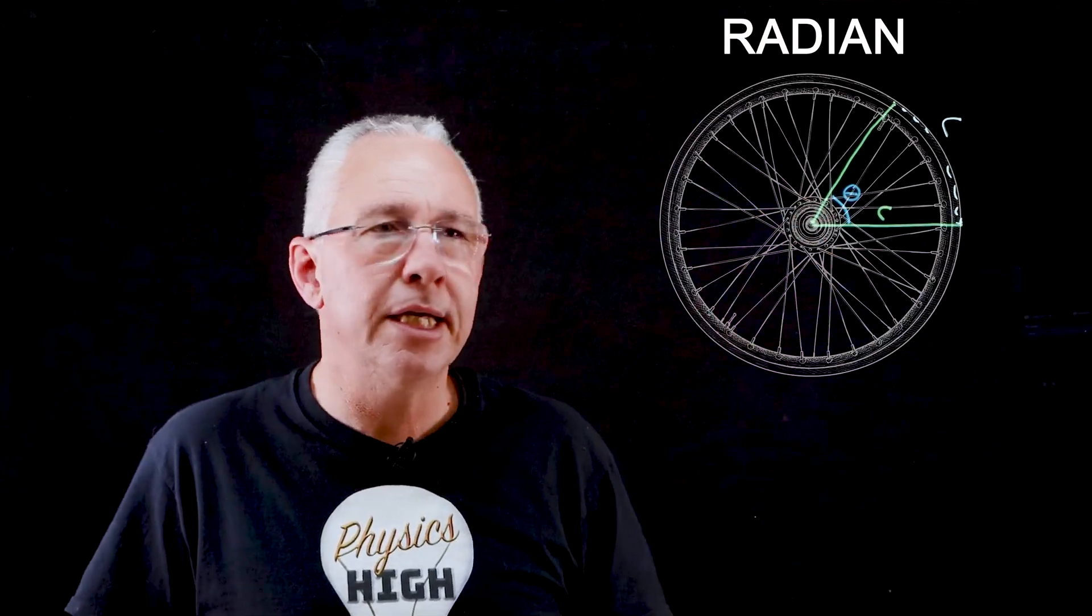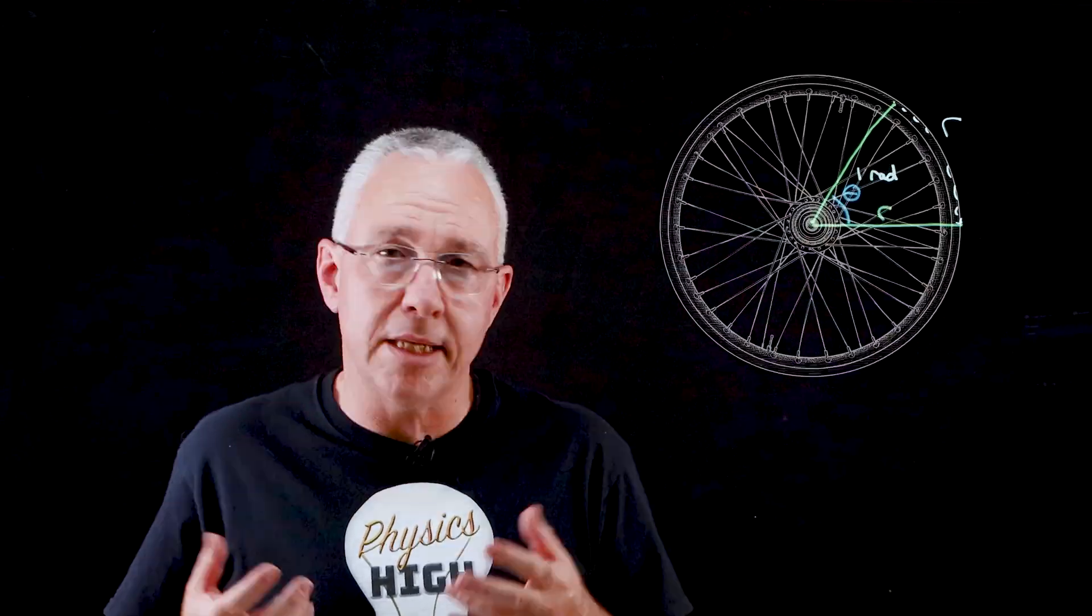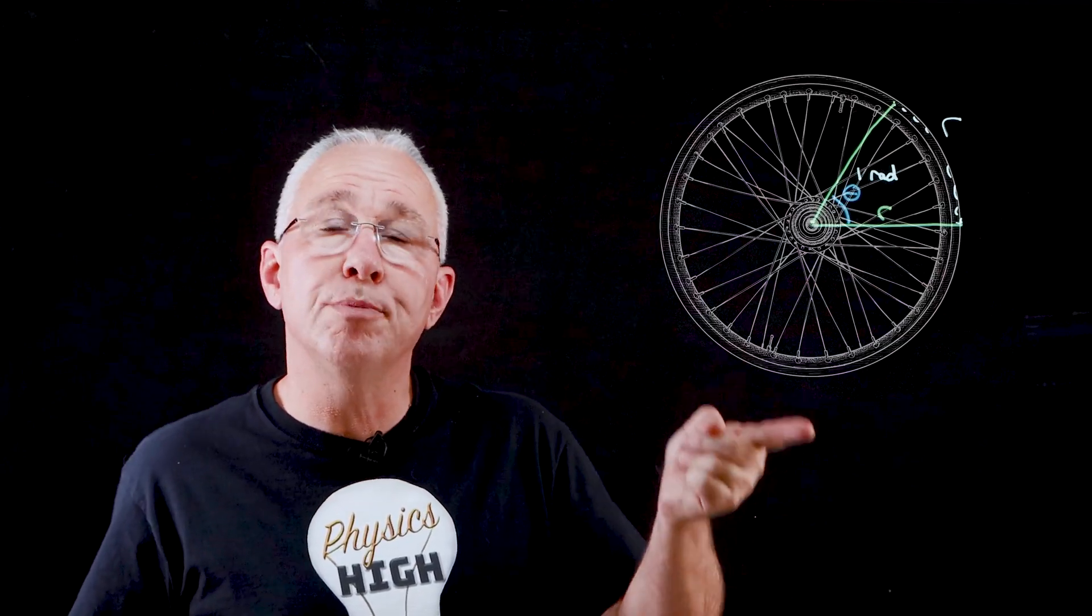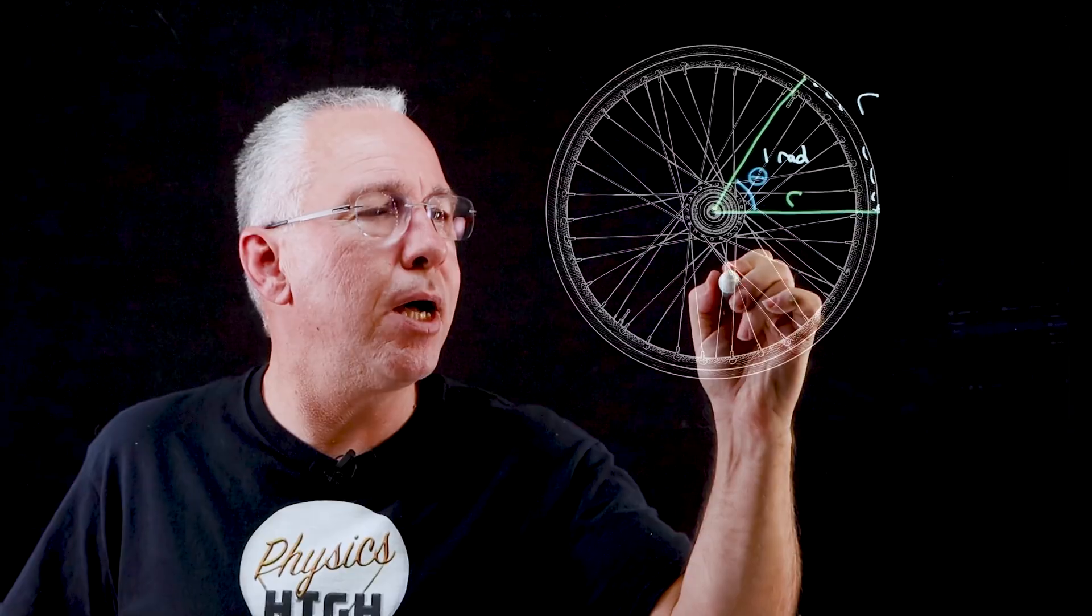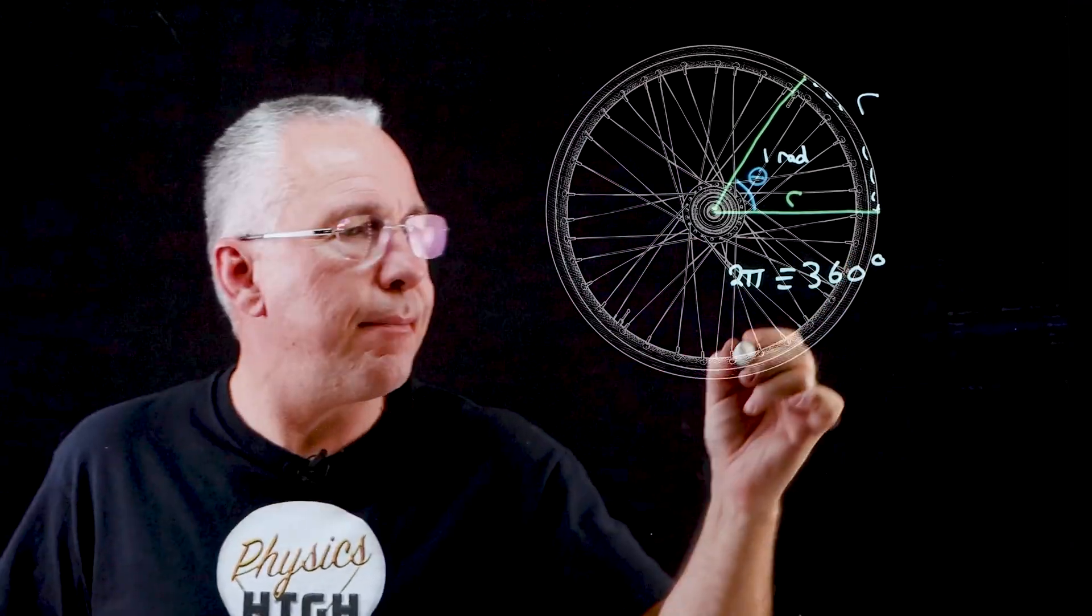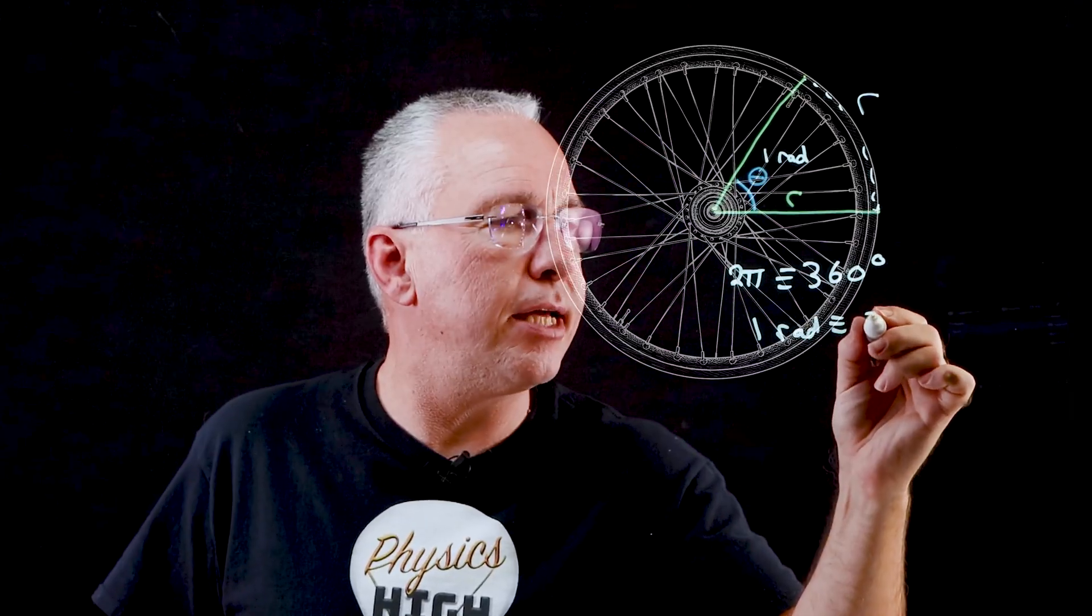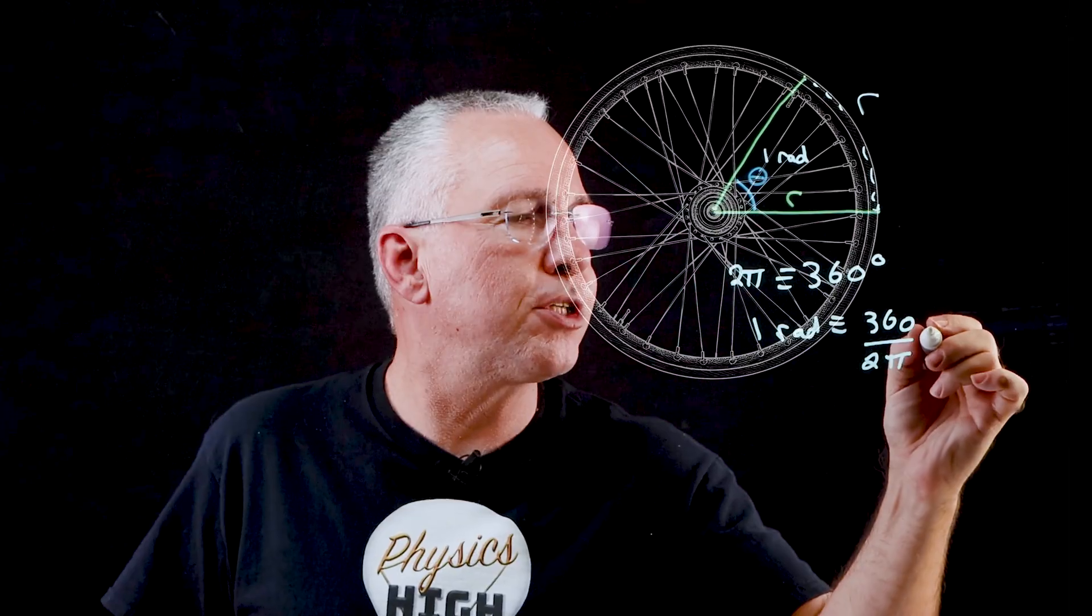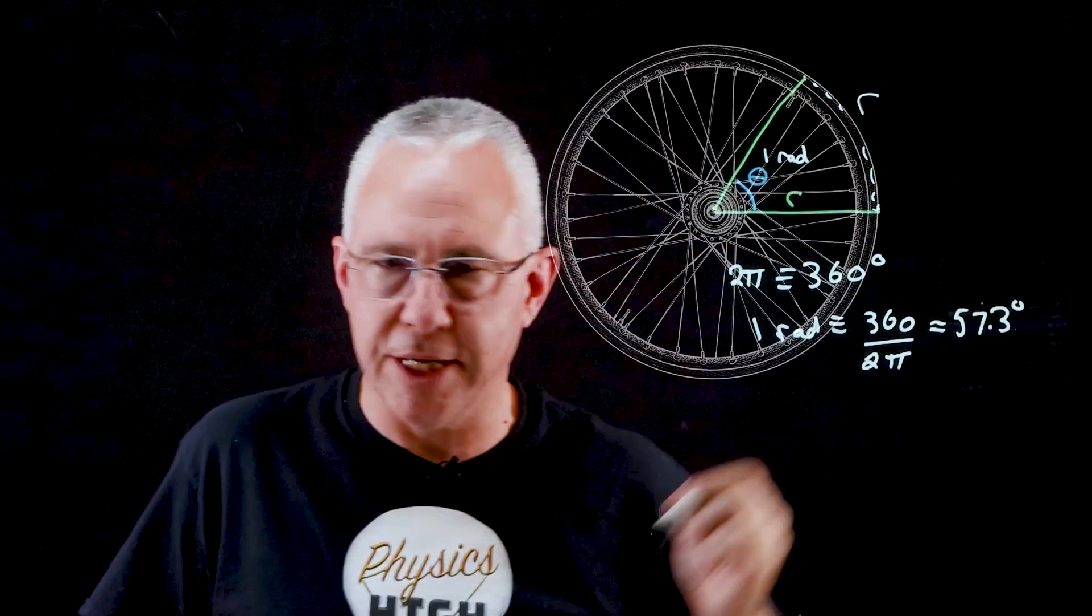Now that means this angle is equivalent to one radian. Now since the circumference of a circle is equal to 2πr, we can argue that it is 2π radians to make one complete revolution. Now since 2π is equivalent to 360 degrees, that means one radian is equivalent to 360 divided by 2π, which approximately equals 57.3 degrees.